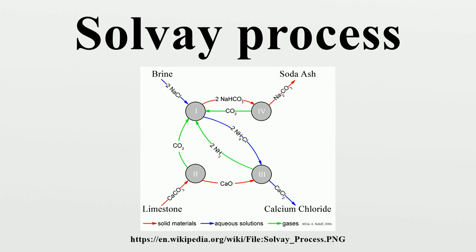In 1884, the Solvay brothers licensed Americans William B. Cogswell and Roland Hazard to produce soda ash in the U.S., and formed a joint venture to build and operate a plant in Solvay, New York. By the 1890s, Solvay process plants produced the majority of the world's soda ash. In 1938, large deposits of the mineral trona were discovered near the Green River in Wyoming. Sodium carbonate can be mined from this source cheaper than it can be produced by the Solvay process. With the closing of the original Solvay, New York plant in 1986, there have been no Solvay-based plants operating in North America. Throughout the rest of the world, the Solvay process remains the major source of soda ash.